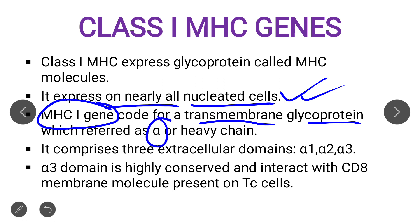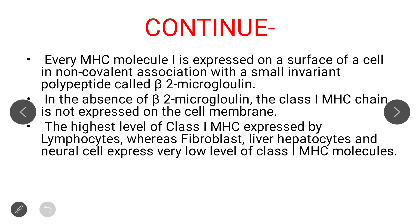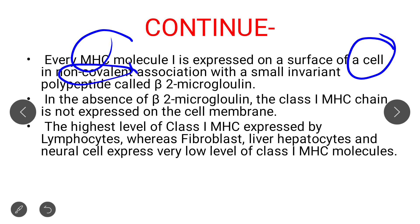It has three extracellular domains: alpha 1, alpha 2, and alpha 3. The alpha 3 domain is highly conserved — this is where the CD8 molecule binds, as I already explained in the figure. Every MHC molecule expressed on the surface of a cell is in non-covalent association with a small invariant polypeptide called beta-2 microglobulin, whose function is to make this non-covalent association with the surface of the cell and the MHC molecule.